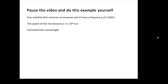Here's one for you to do — have a read, I'll show you the answer in a few seconds. And the answer is this: this time we're working out the wavelength. Lambda equals C over F: 3 times 10 to the 8 divided by 3.3 times 10 to the 9, because it's giga. That gives an answer of 0.091 meters. If I wanted to be flash, I could say 9.1 centimeters — but I don't show off, so there.